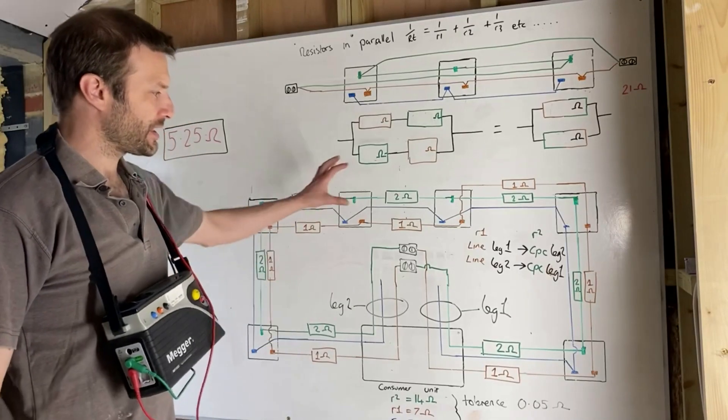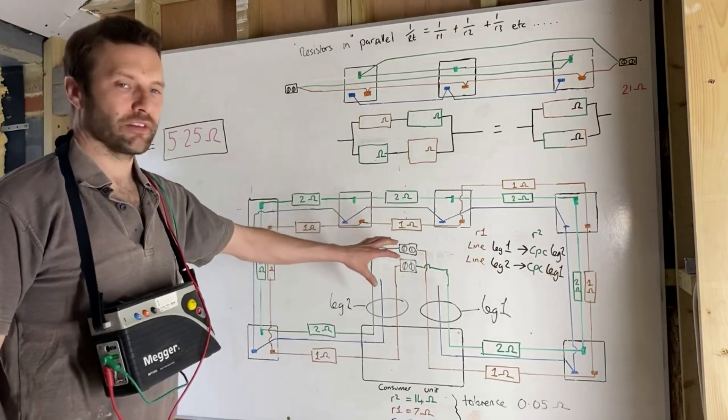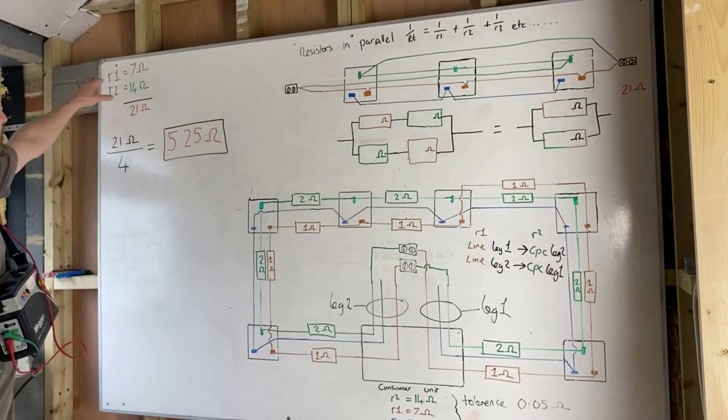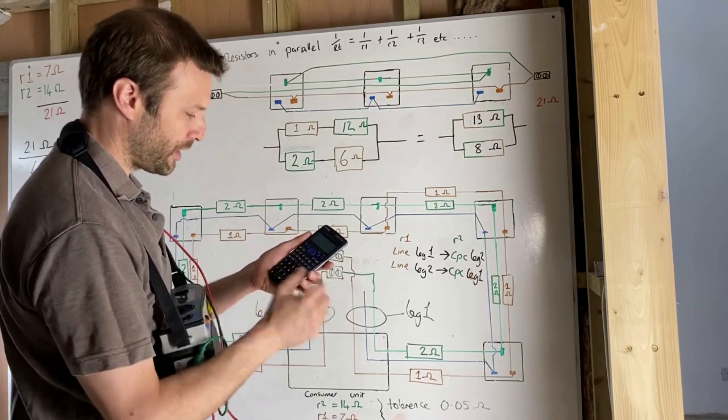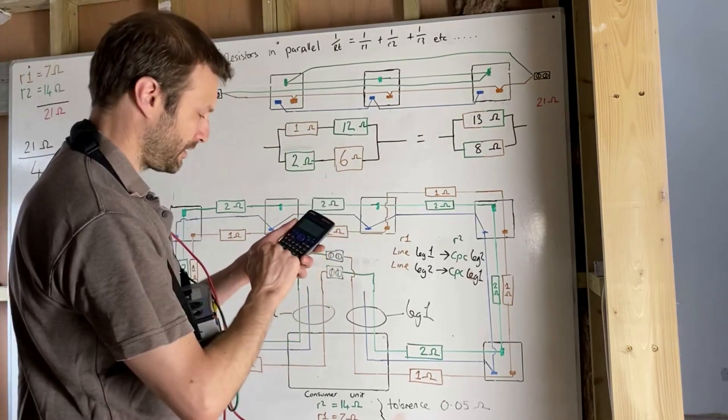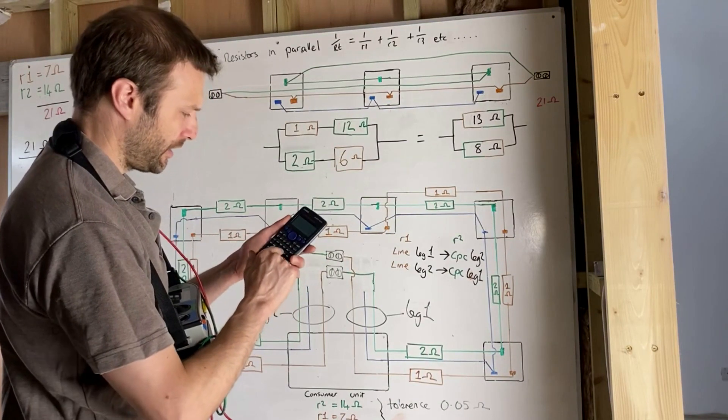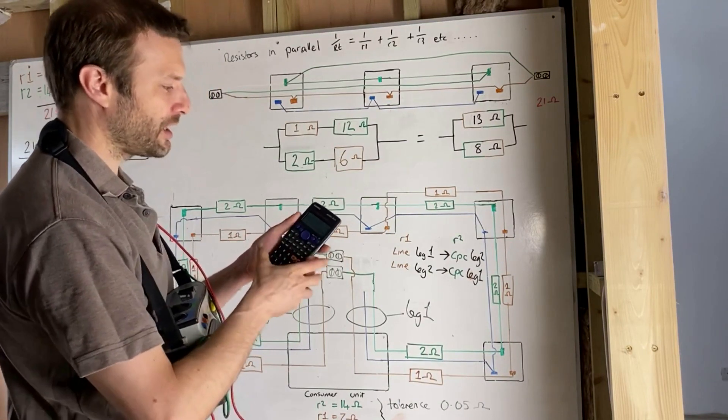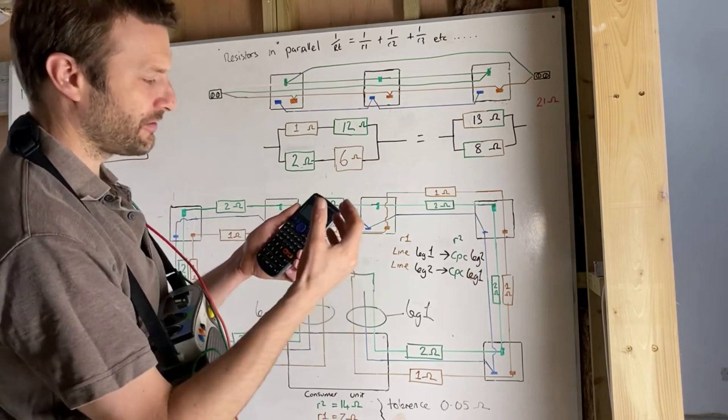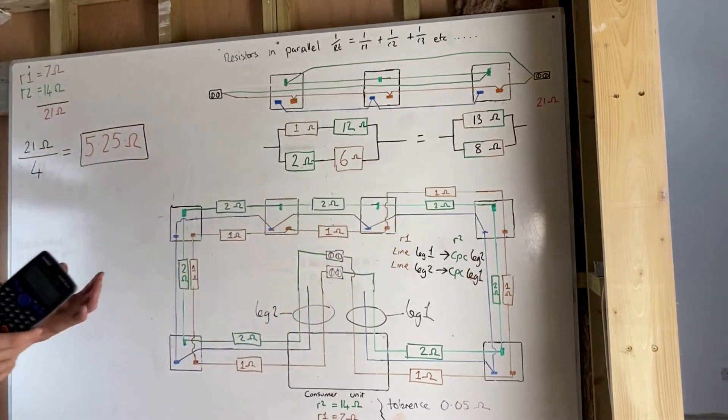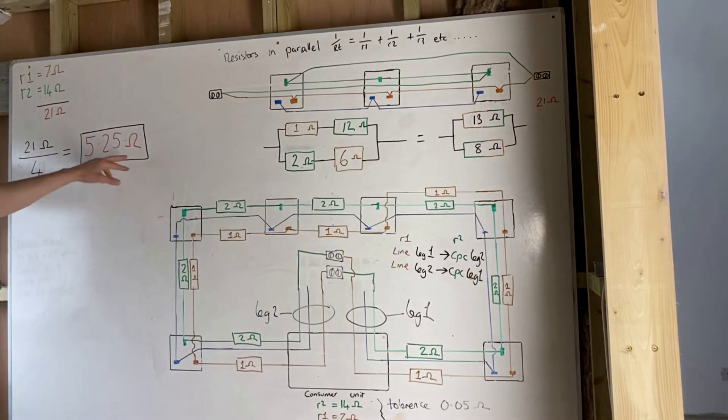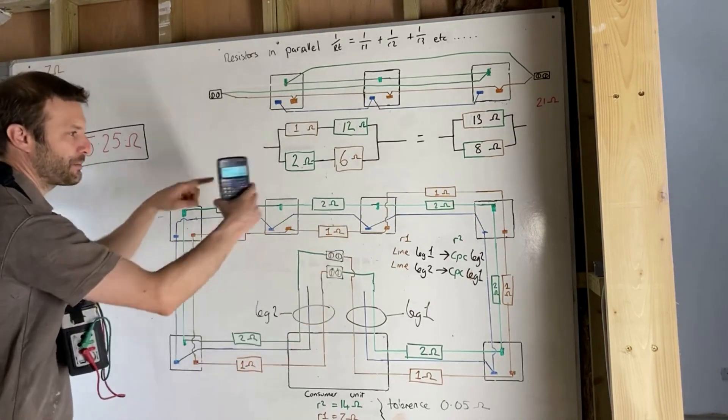I did a video a while back where I drew up a ring final circuit with 2.5 line and 1.5 CPC, and I tried to work out the different resistances in that circuit using the IET's 18th edition Amendment 1, GN3. I tried calculating the resistances at each point in the circuit and came up with a slight variance at each point, although it was still within the 0.05 ohm tolerance. At the time, I hadn't quite made the link about where the discrepancy came from and asked if anyone could let me know why.